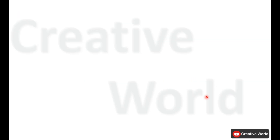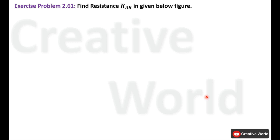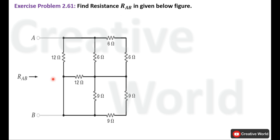Now let's move towards the problem. Exercise Problem No. 2.61: Find resistance RAB in the given figure. This is the circuit diagram of the given problem. We have to find the resistance between the two points labeled as RAB.